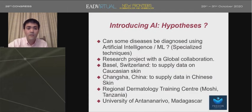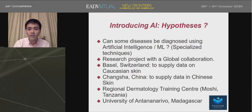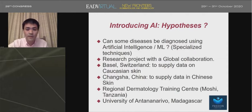How do we collaborate on this artificial intelligence project? We started with four members. We have a team in Basel and in China who work on the research. The dataset collection is at the Regional Dermatology Training Center in Tanzania and the University of Antananarivo in Madagascar.